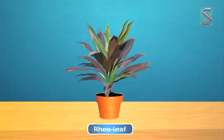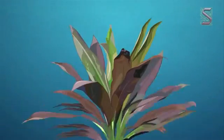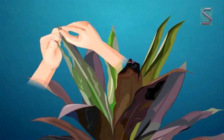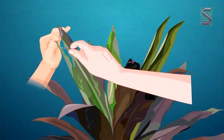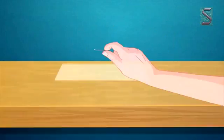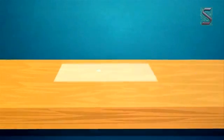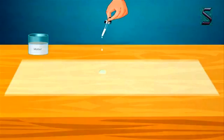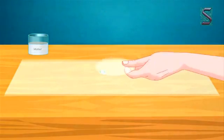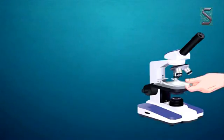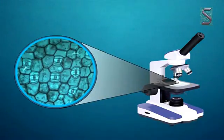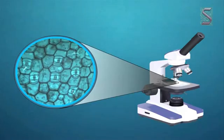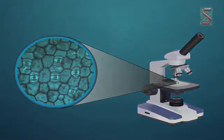We will examine a cell membrane. Take a real leaf and tear it. Look at the edge of the torn part — it is light in color. Now peel the light colored part and put it on a slide. Add a drop of water. If you observe this under a microscope, you will find the cells with membrane.